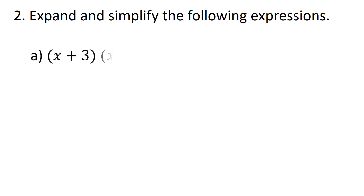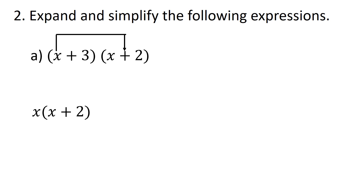Example 2: expand and simplify the following expressions. First expression: x plus 3 into x plus 2. This means x plus 3 must be multiplied by x plus 2. The procedure is: first, take the first term in the first bracket, that is x, multiplied by the whole of the second bracket — x into x plus 2 — then move on to plus 3 multiplied by x plus 2, written as plus 3 into x plus 2.